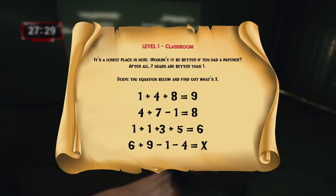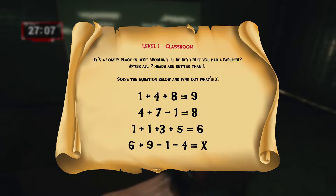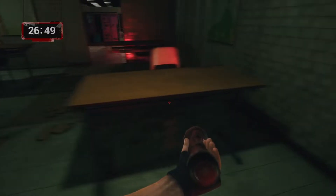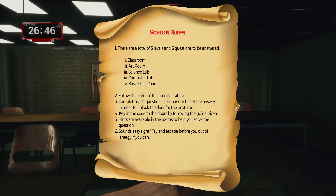Since the question says 'two heads are better than one,' if we make 1² + 4² + 8² = 9², that makes sense. To find X, we apply the same logic to the last equation: 6² + 9² − 1² − 4² gives us 100 in power-of-two form. But since the original equation uses square roots, the square root of 100 is 10 — that is the final answer.